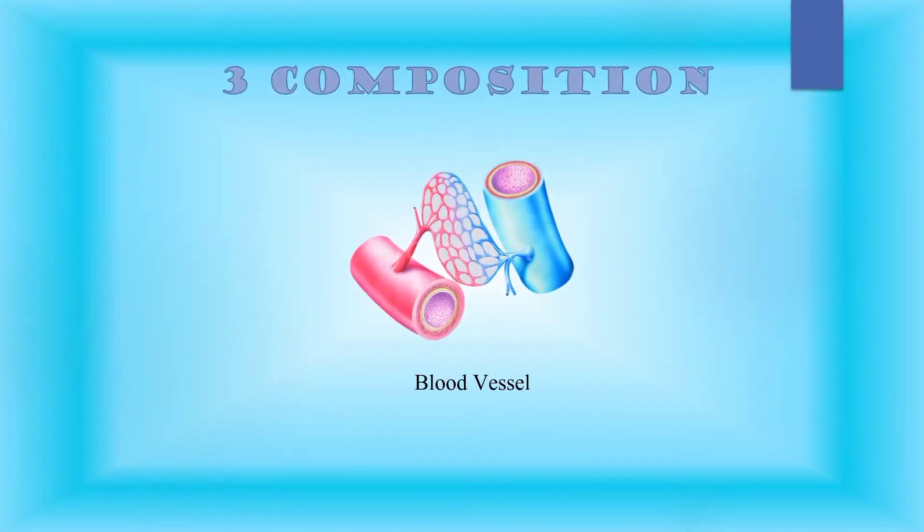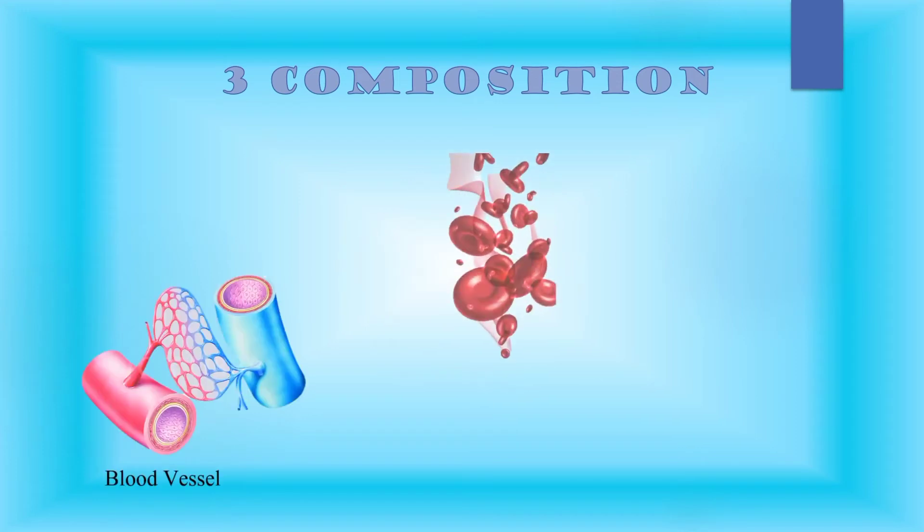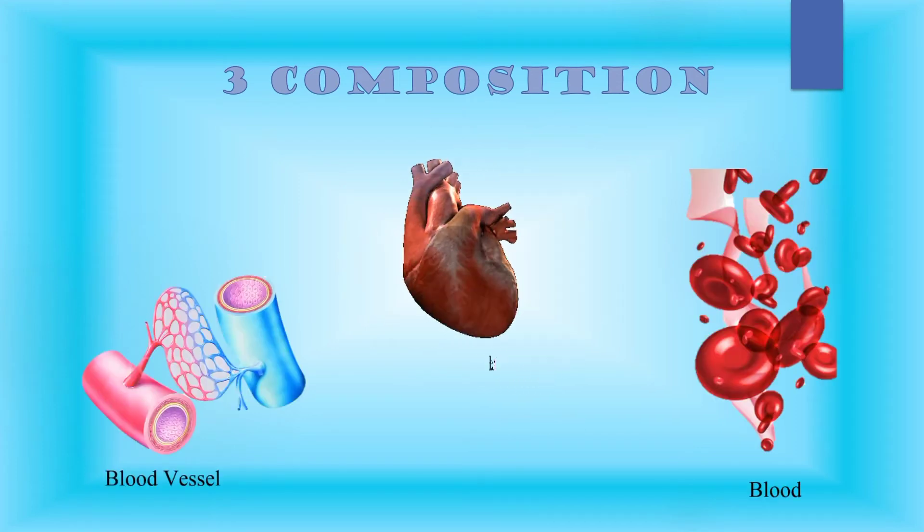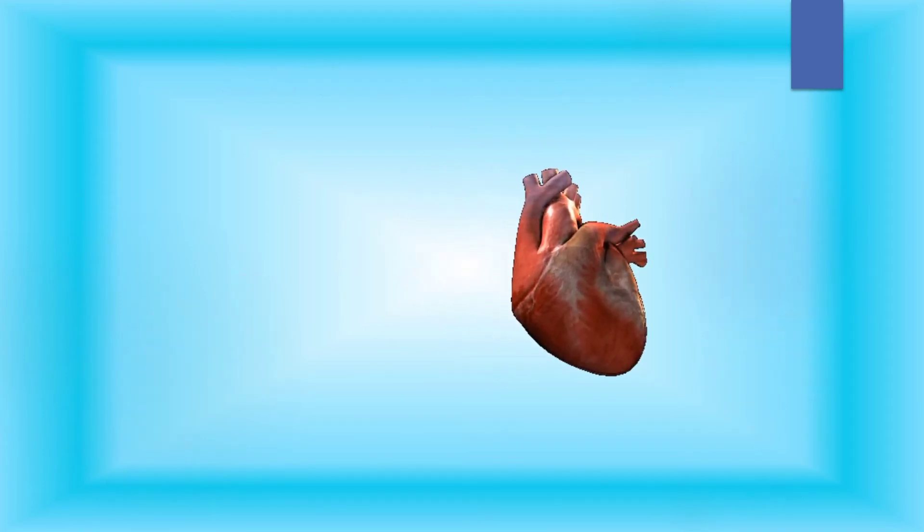There are three compositions of the cardiovascular system: we have the blood vessels, the blood, and of course, the heart.